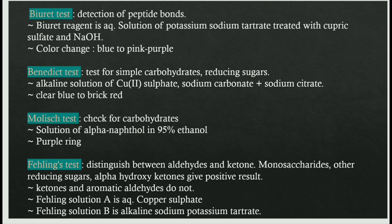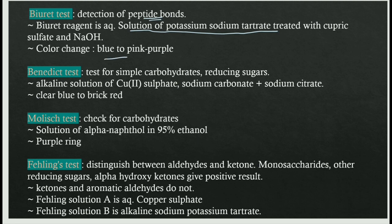Some other important chemical tests: the biuret test is for detection of peptide bonds. The reagent is an aqueous solution of potassium sodium tartrate treated with cuprous sulfate and NaOH. The color change is blue to pink-purple. Benedict's test is for simple carbohydrates and reducing sugars. The reagent is an alkaline solution of copper(II) sulfate, sodium carbonate, and sodium citrate, with a color change from clear blue to brick red.